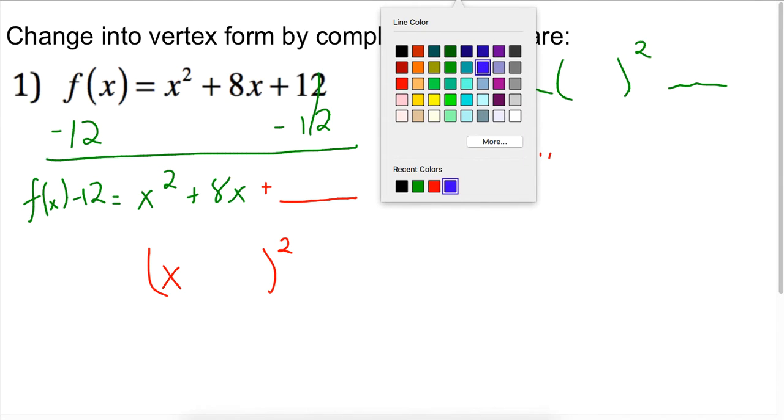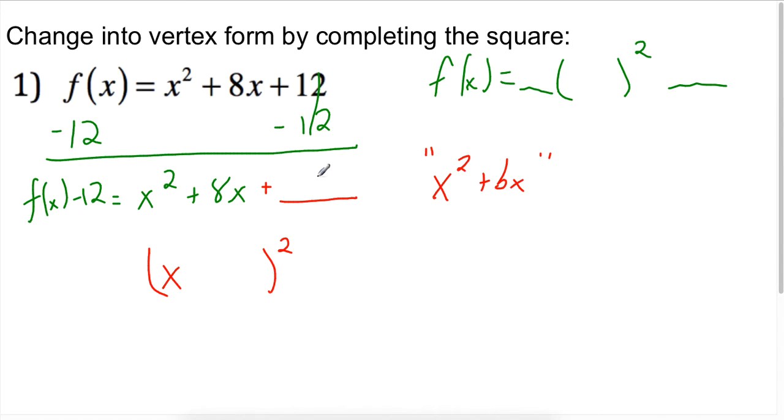we want to, in order to figure out what this empty term here, this missing term is, I want to take half of the b term and square it. That's what my new c term is. So here is 8. I take half of 8, which is 4, and I square that to give me 16.